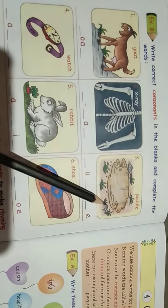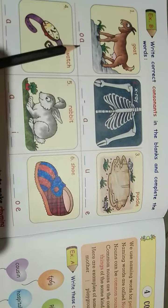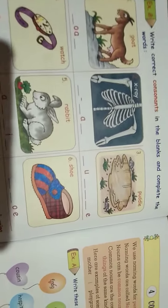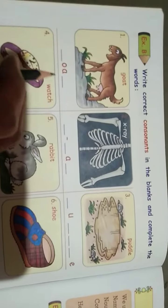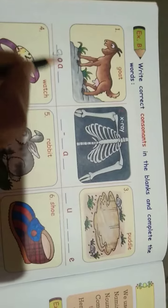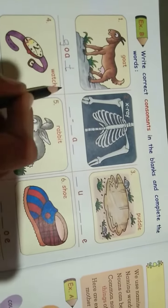Here observe which picture is given, that picture's name. We want to write consonants here with the given vowels. Which picture of that goat? So here O and A are given. So here we want to write G, O and A given, we want to write T. Goat.